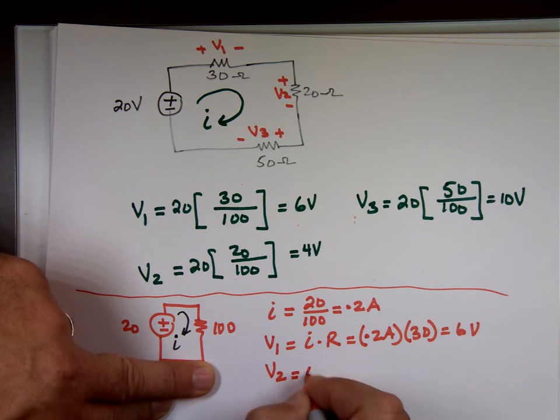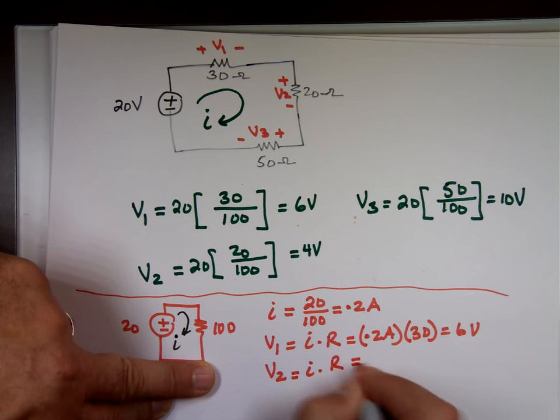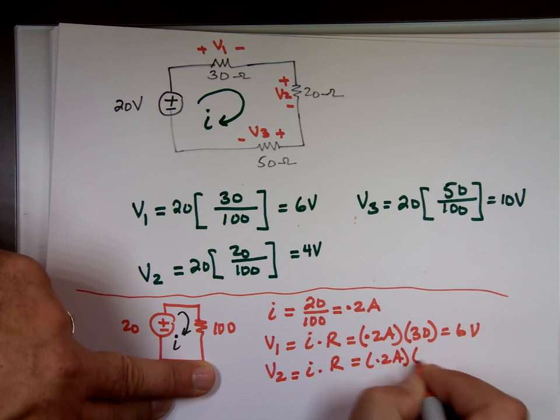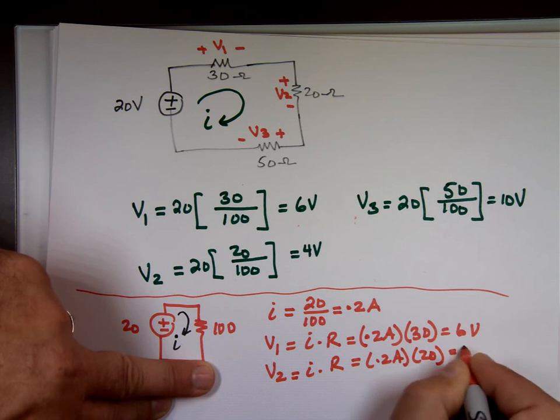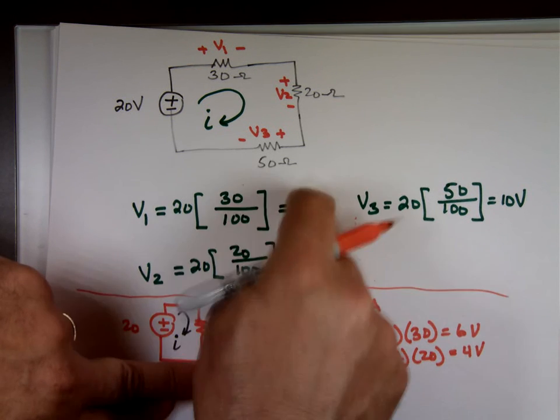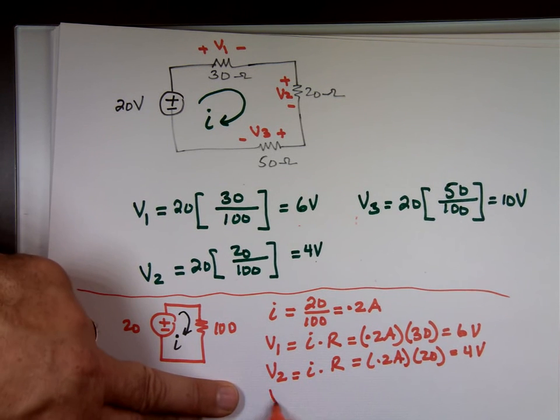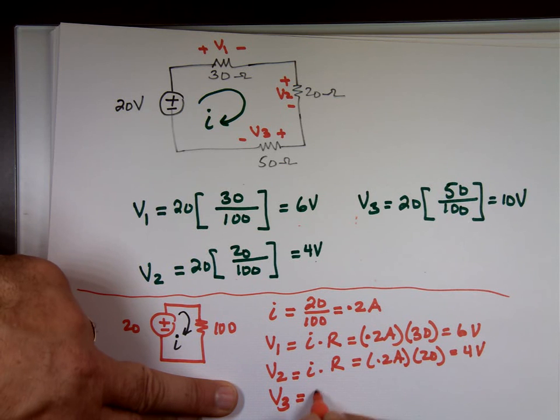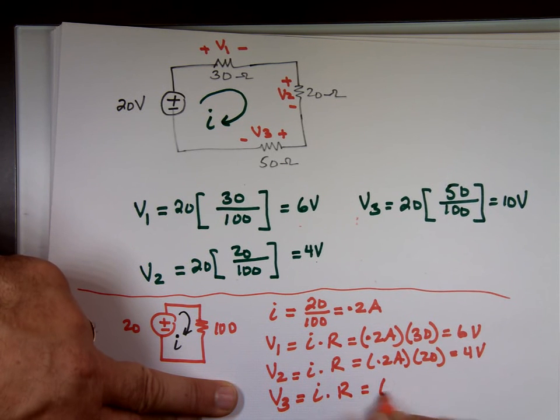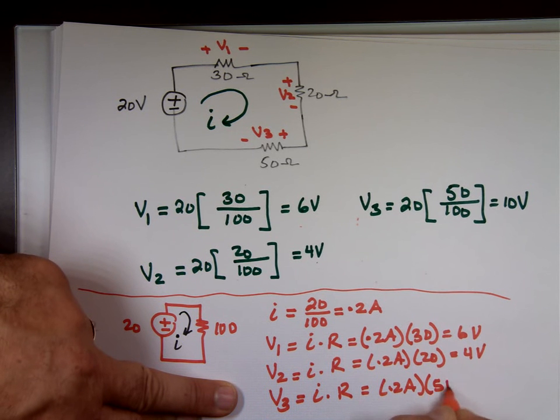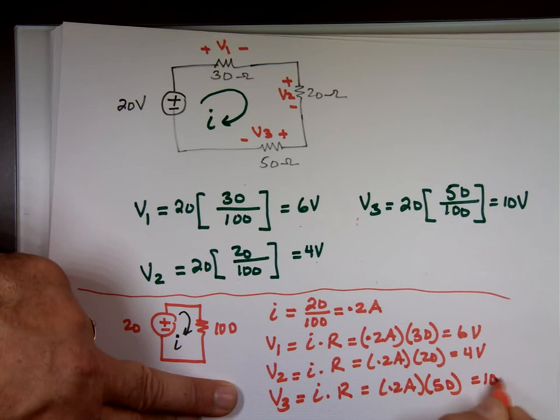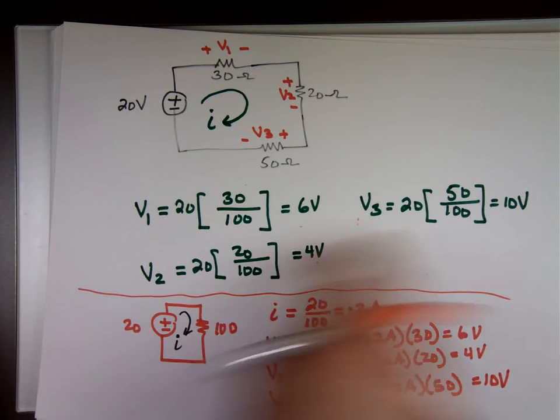V3 equals I times R. 0.2 amps times 50 and that's 10 volts. So that's another way to prove that this equation is really correct. Voltage division does work. We use that a lot, voltage division, so quicker way to get to the answer.